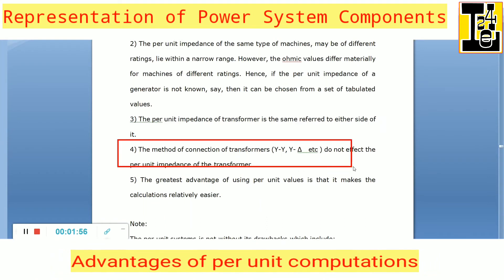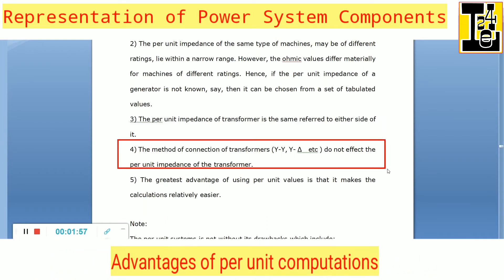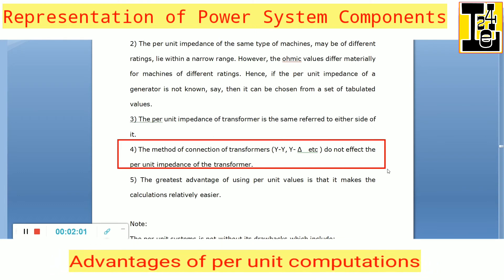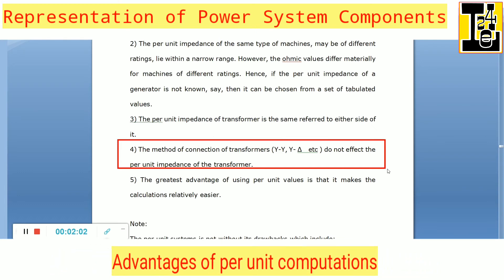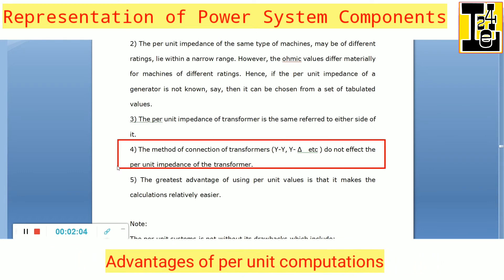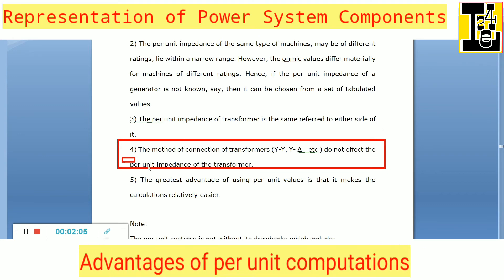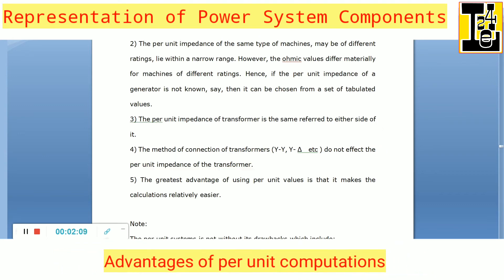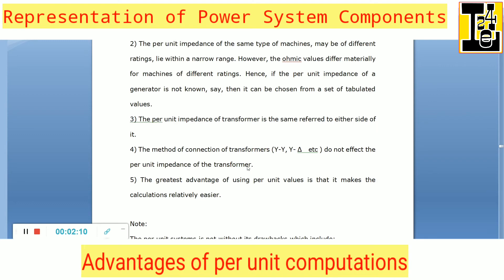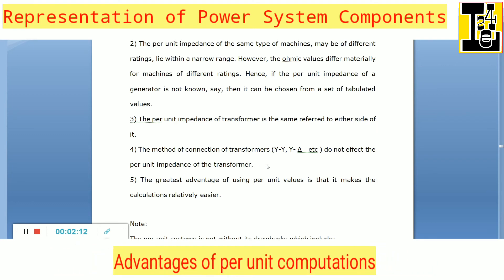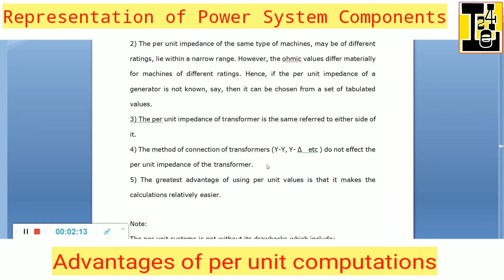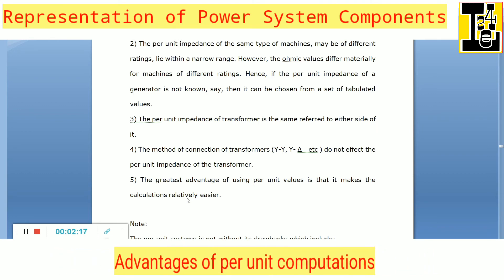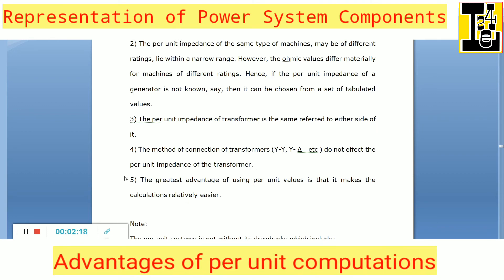The fourth advantage is that the method of connection of transformers — that is, star-star, star-delta, etc. — does not affect the per unit impedance of the transformer. So irrespective of the connection, the per unit impedance value of the transformer remains the same.